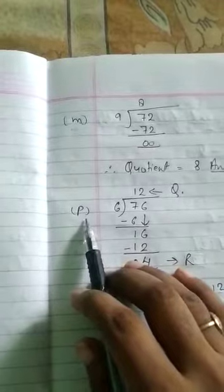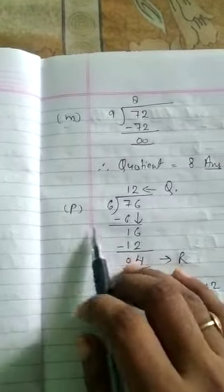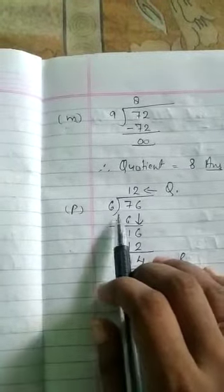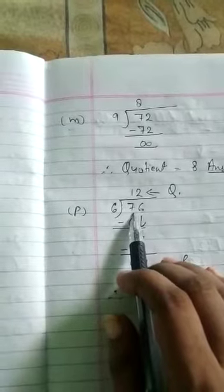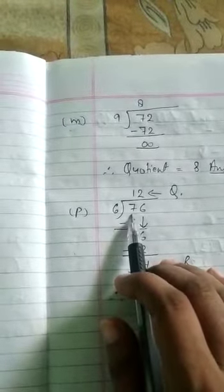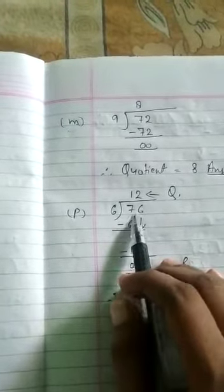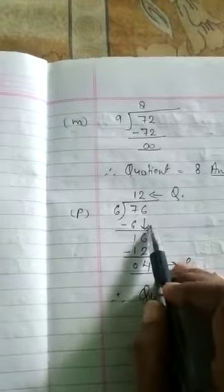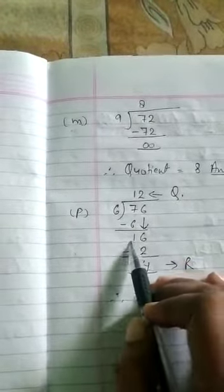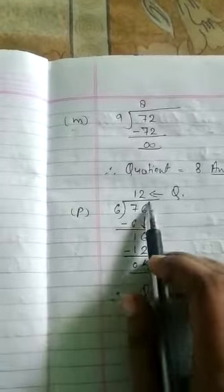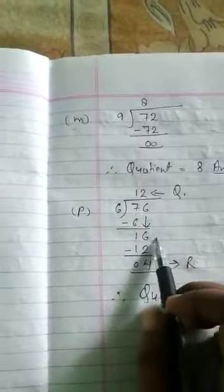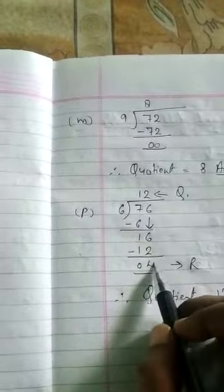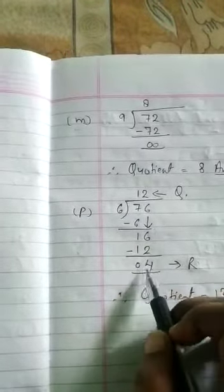Again we take question 2. We have to divide 76 by 6. 7 is bigger than 6, that's why we take 1 digit only. 6 ones are 6. 7 minus 6 is 1. 6 will come down as it is, 16. 6 twos are 12. 6 minus 2 is 4. 1 minus 1 is 0.